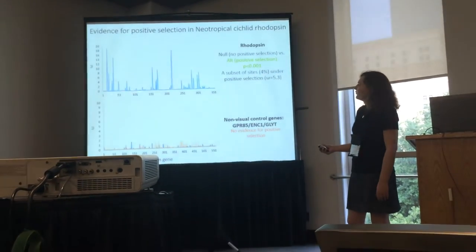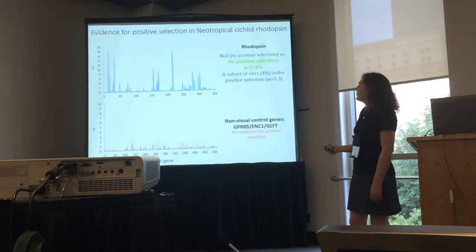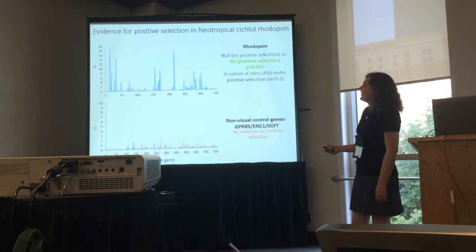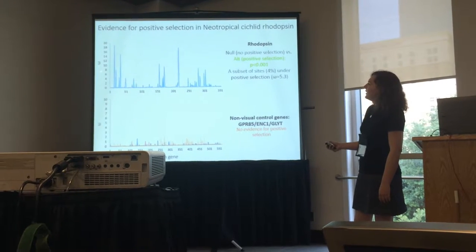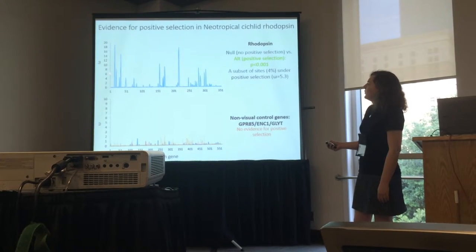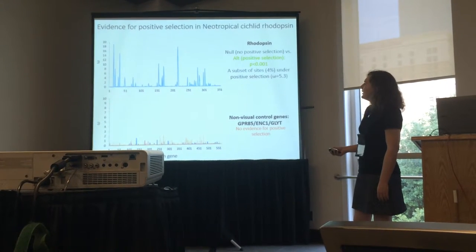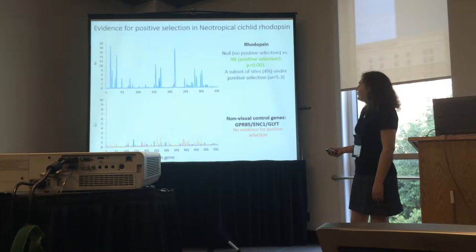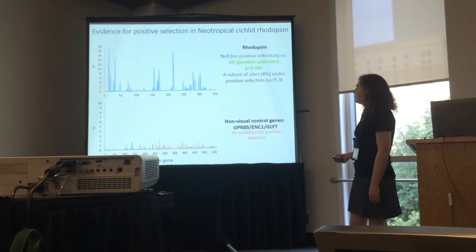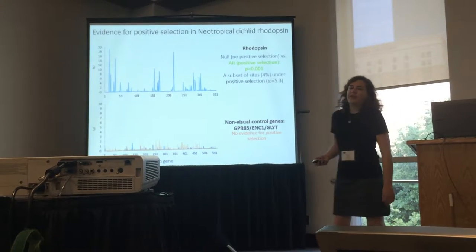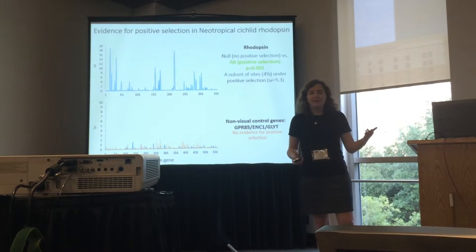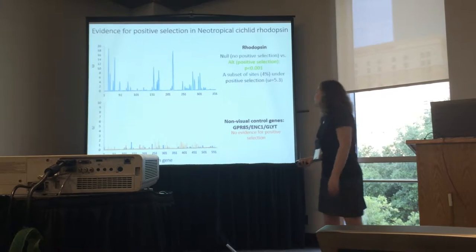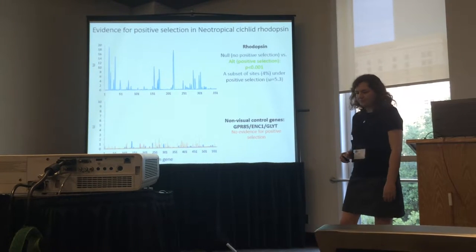You can see here the spectrum of codons across the protein, with the omega value on the y-axis. When we look at non-visual control genes that I also analyzed from the same exon capture experiment, we don't see such a pattern.